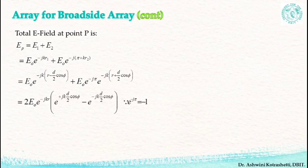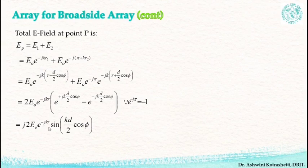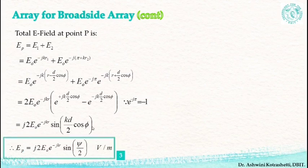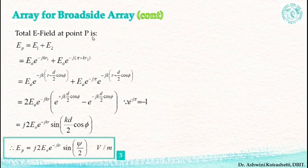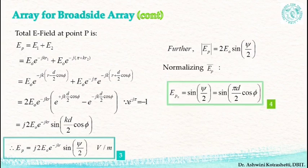Rearranging the terms and applying e raised to −jπ = −1, I get j2·E0·e raised to −jkr · sin(kd/2 · cos φ), where kd·cos φ is ψ. So the net electric field at the distant observation point P is j2·E0·e raised to −jkr · sin(ψ/2) volts per meter. Taking the magnitude of EP and normalizing, the normalized EP equals sin(ψ/2), which is also equal to sin(πd·cos φ / 2).